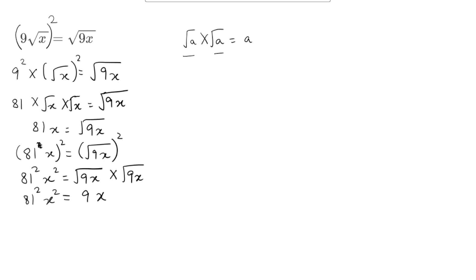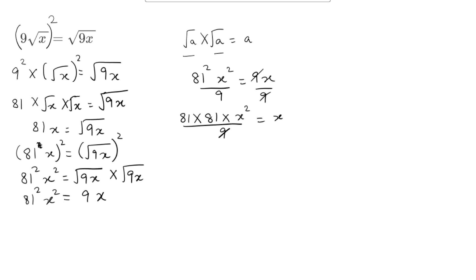Now we need to divide both sides by 9. So if I divide 81 squared x squared by 9 and 9x by 9, the 9s get cancelled. 81 squared can be written as 81 times 81, times x squared over 9 equals x. Since 9 times 9 is 81, and 9 times 81 is 729, we get 729x squared equals x.